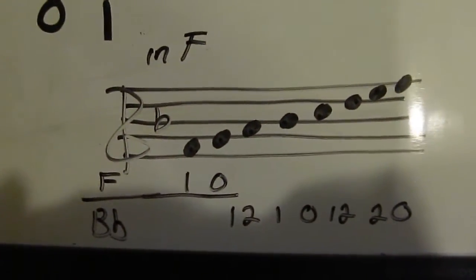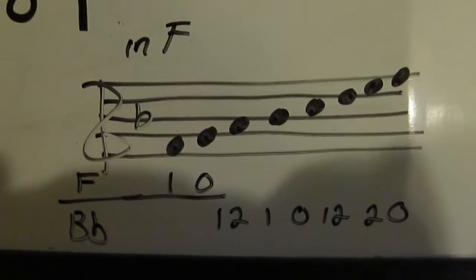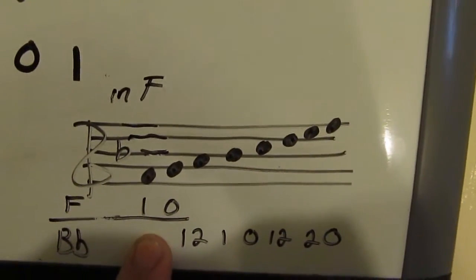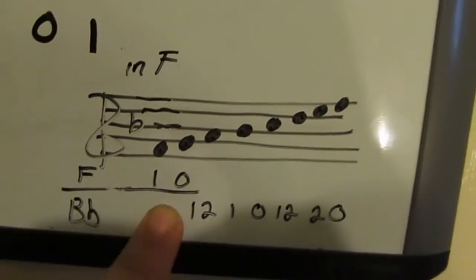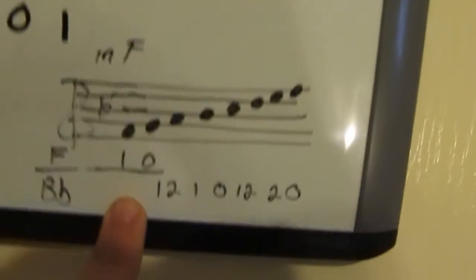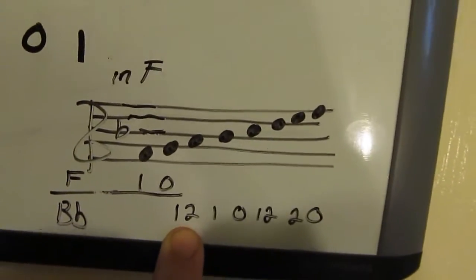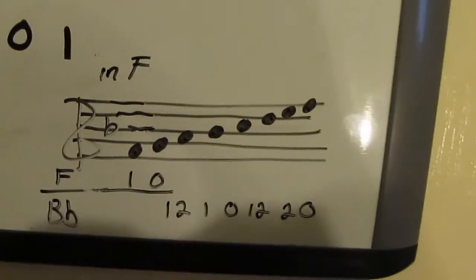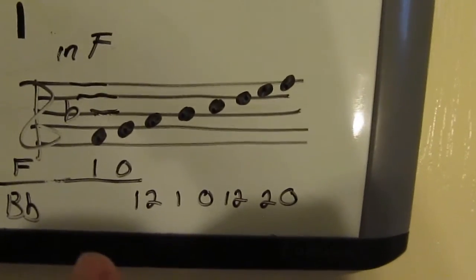Now, this is my version of the Bb concert scale or F major scale. These two notes are the only notes that I use on the F side. Because the F side, in my opinion, is much more in tune than the Bb side. Same goes to this note, T1-2 or A. Because if I use T open, it's not going to be really in tune.